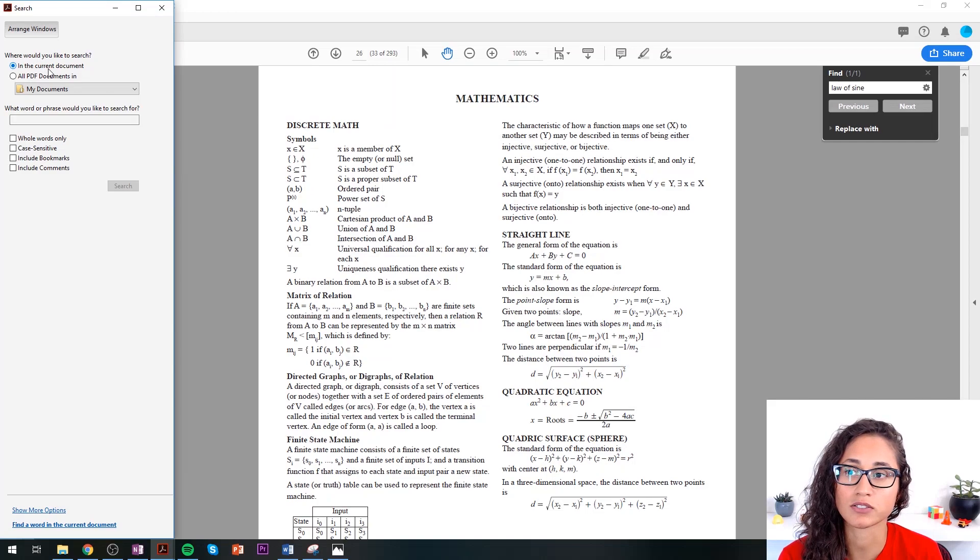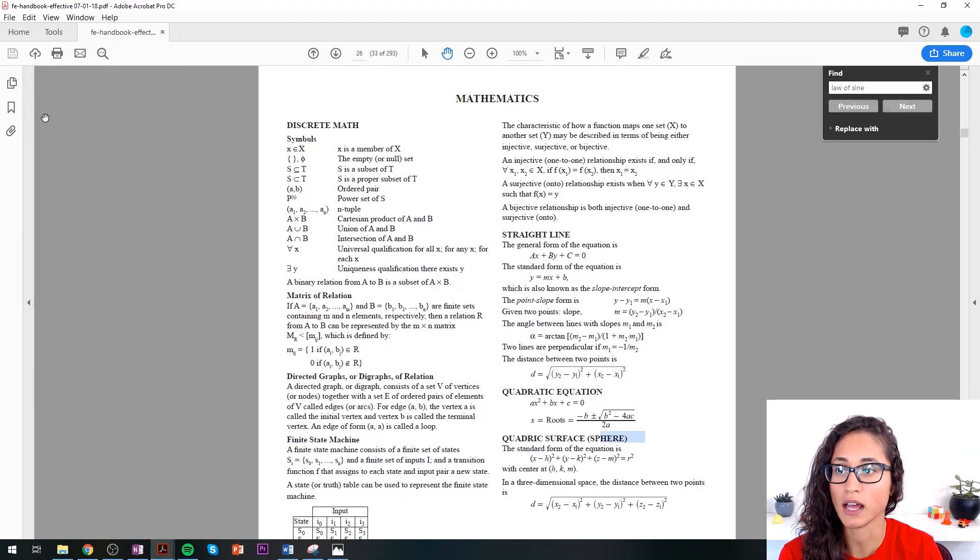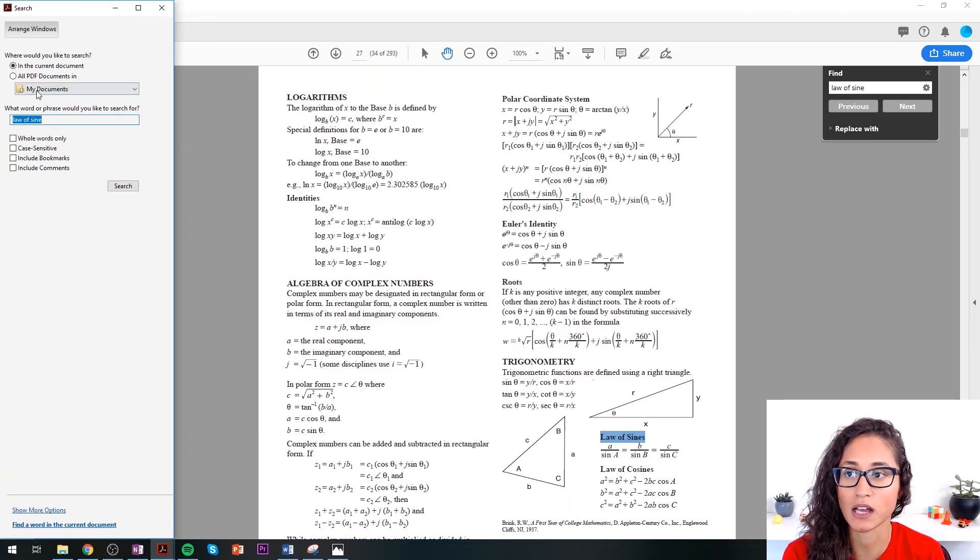Then you just start typing. So let's do Law of Sine and it's going to give you a list. So let's actually try something else that has more equations so that you guys can see the list of the equations and then how to pick or click on the right one, so that way you're faster during the FE exam.